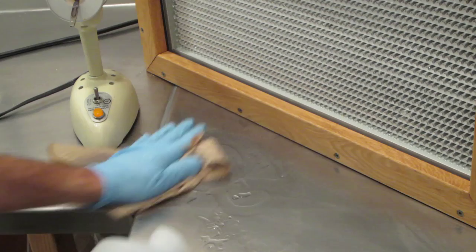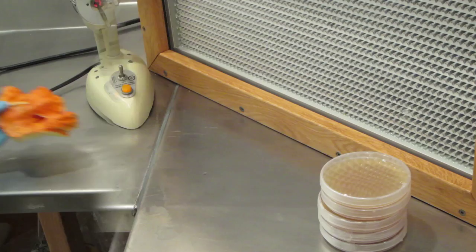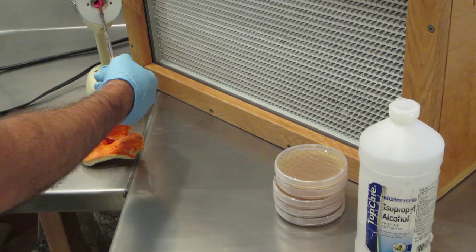A little rubbing alcohol to clean my work area. While my scalpel cools I will remove the parafilm from these pre-poured plates.